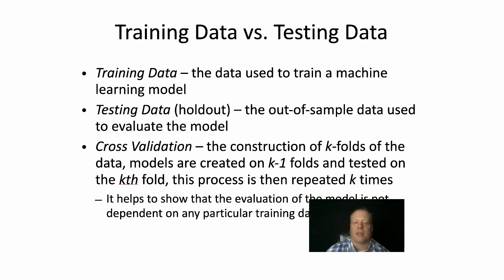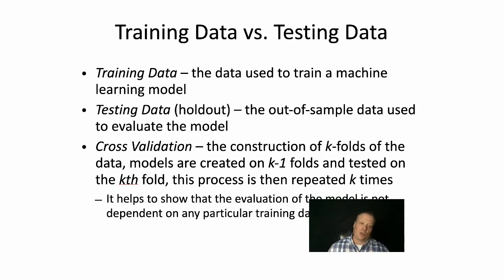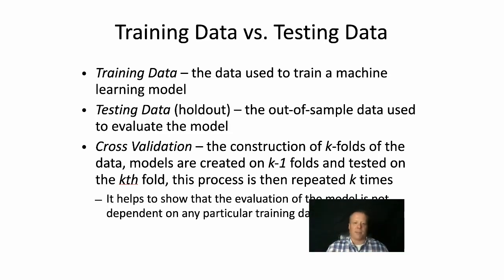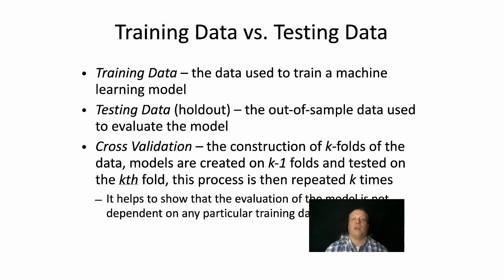Another way to think about this is that the model is divided into training data — the data used to train a machine learning model — and testing data, sometimes also called the holdout data, which is the out-of-sample data used to evaluate the model. We take all of our customers, and maybe we split it 90% and 10%: we build our model on 90% of the data and then test on the remaining 10%. That's a standard training-testing setup.